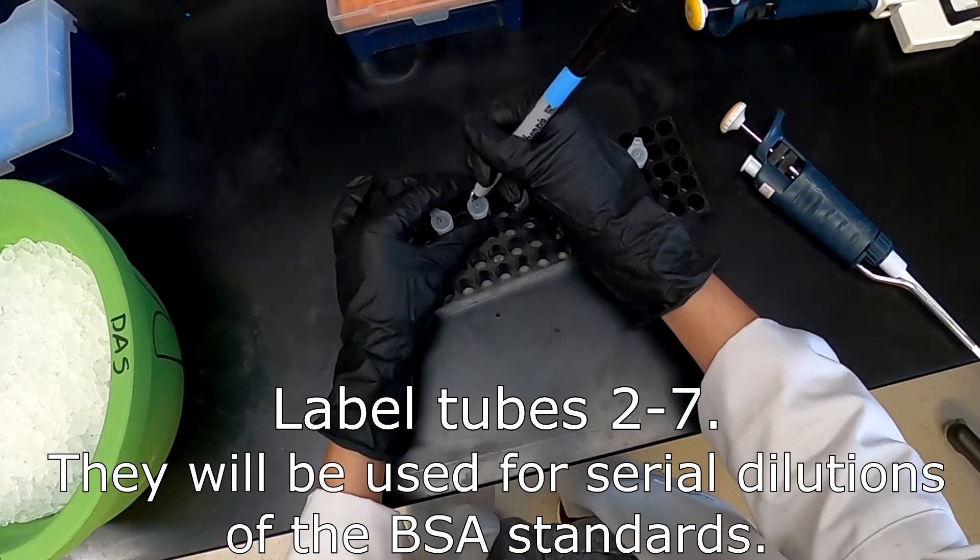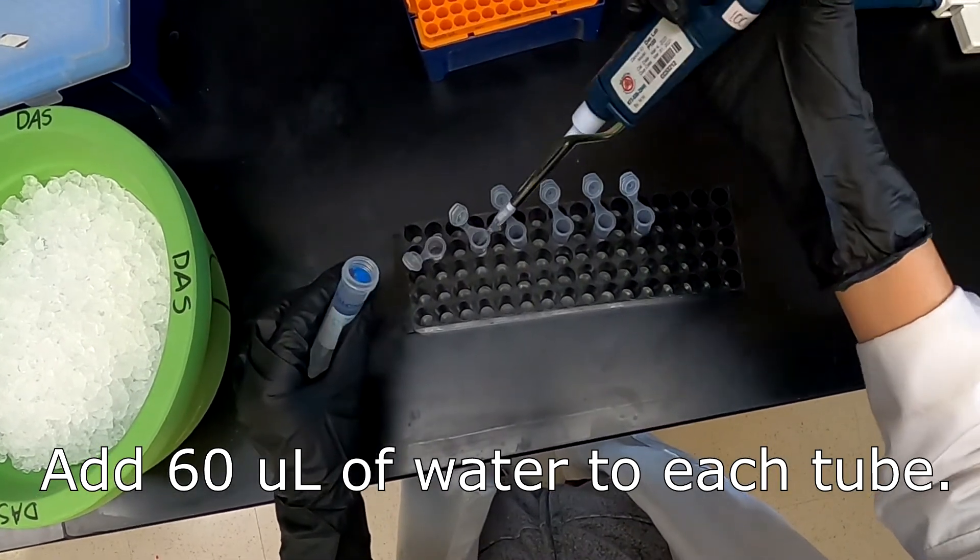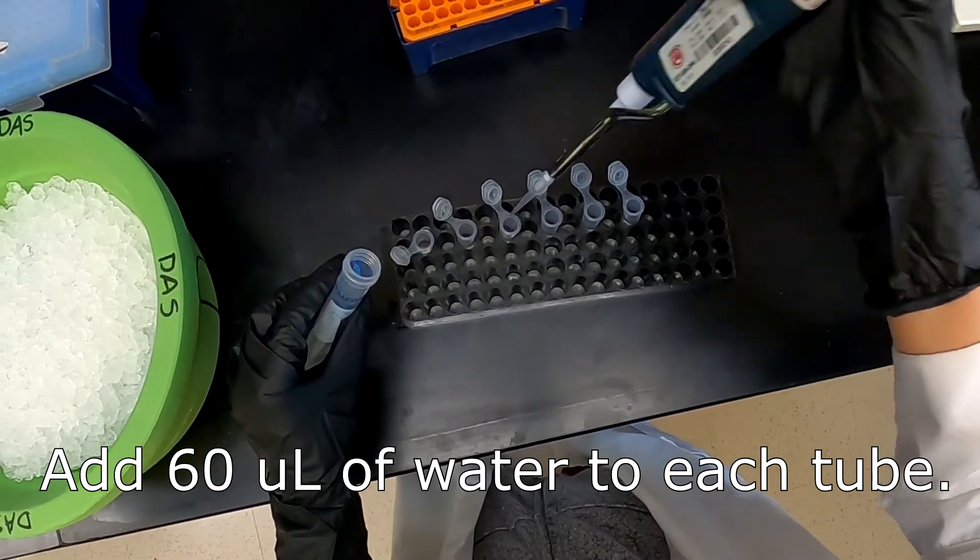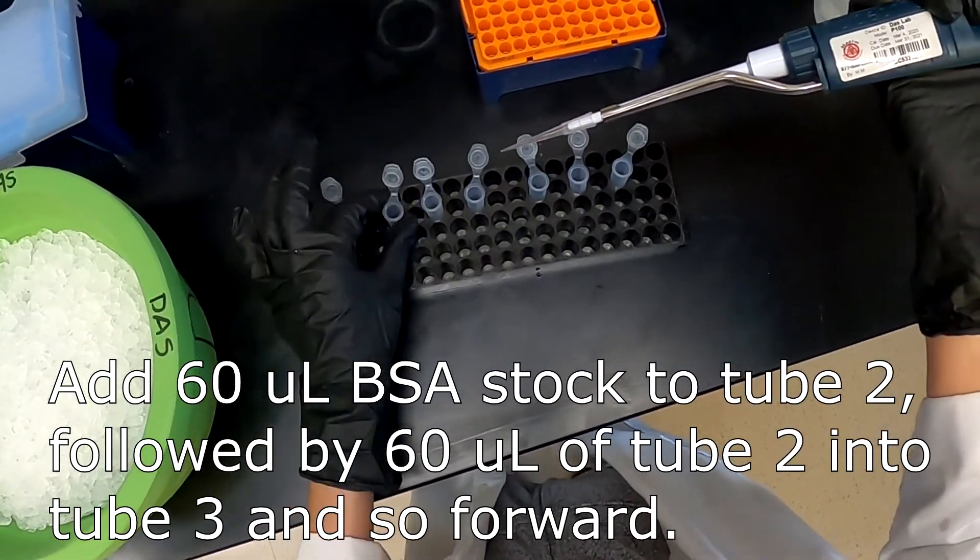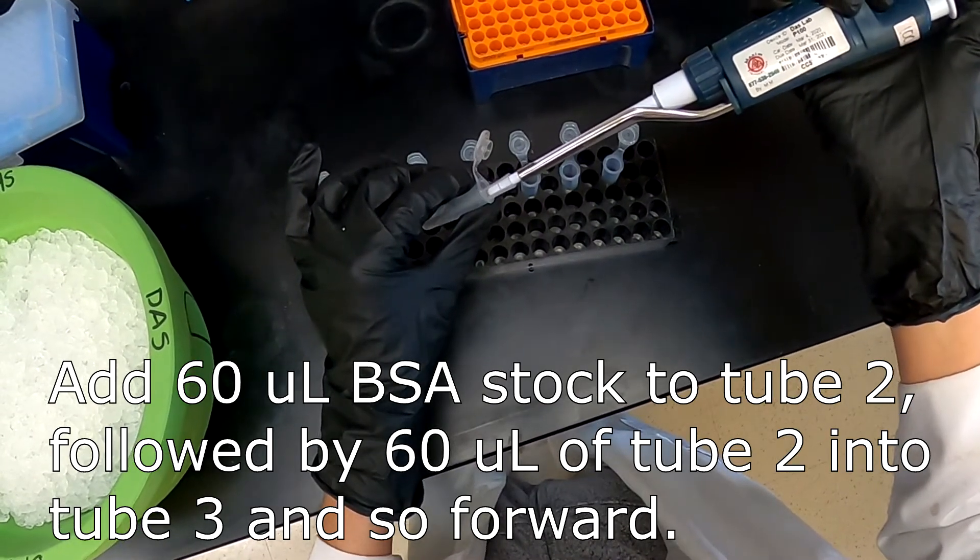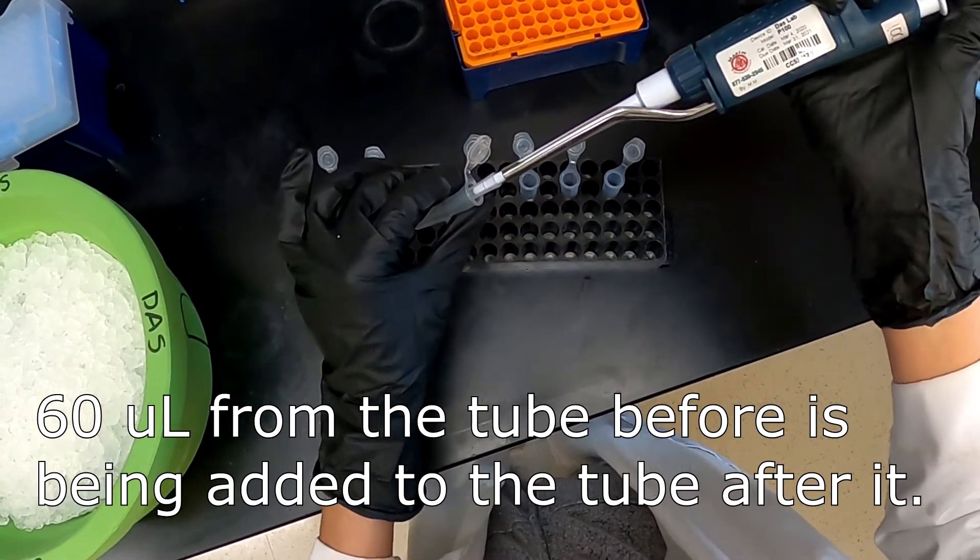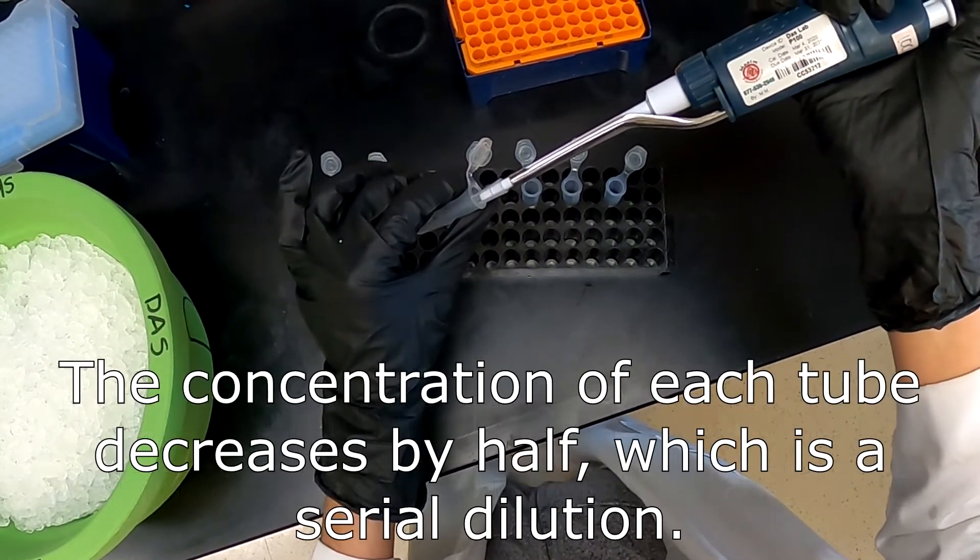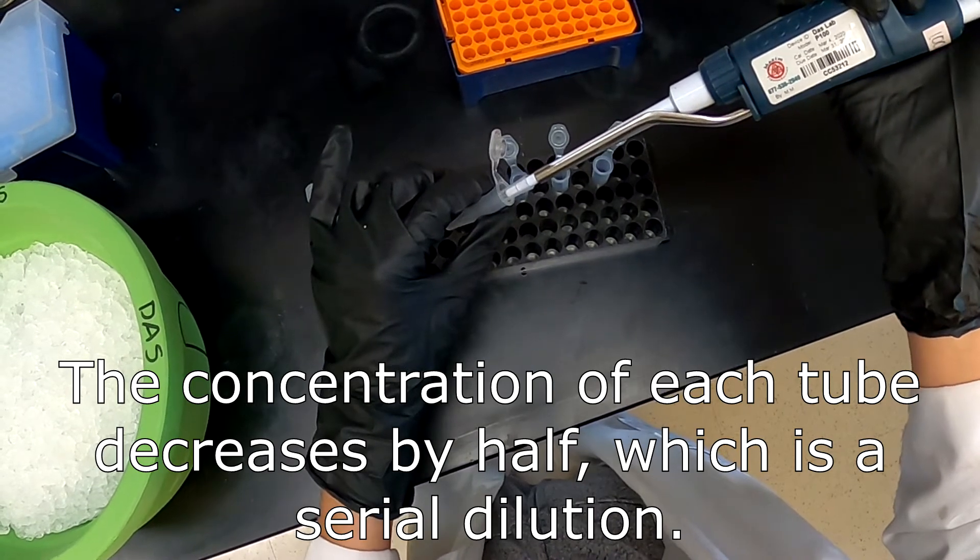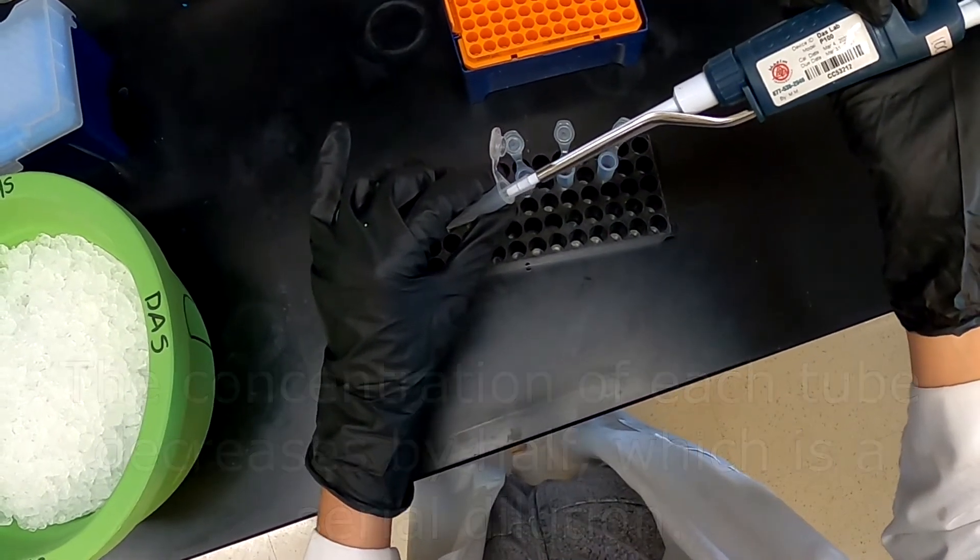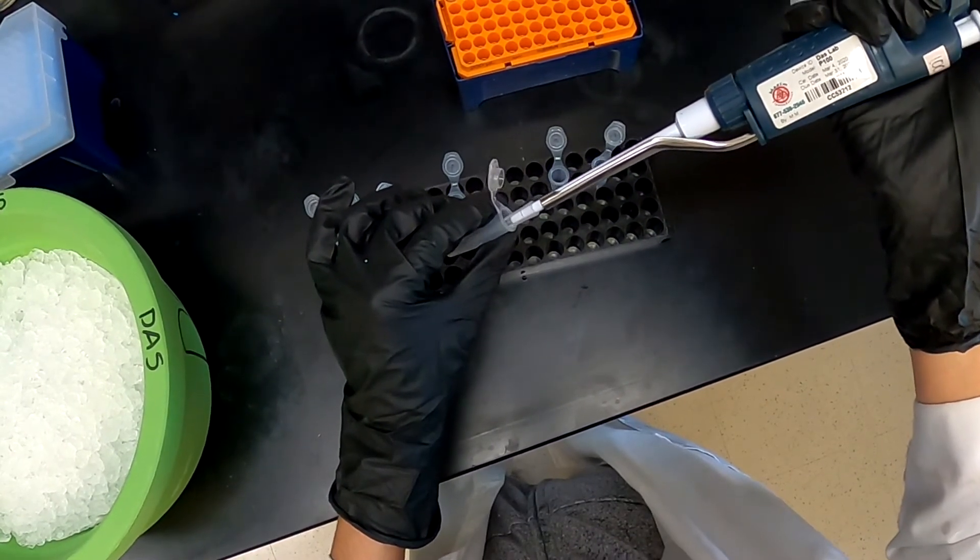In order to start this experiment, we will first start by making our BSA standards, or bovine serum albumin. We will then place 60 microliters of water into tubes labeled 2 through 7. Then we will place 60 microliters of our BSA stock into tube number 2, followed by taking another 60 microliters from tube 2 into tube 3, followed by another 60 microliters from 3 to 4, and so on. This is referred to as a serial dilution, and each tube will have its concentration of BCA lowered by half. So we will end up with concentrations of our BCA standards as 2000, 1000, 500, 250, 125, 62.5, and 31.25 micrograms per ml.